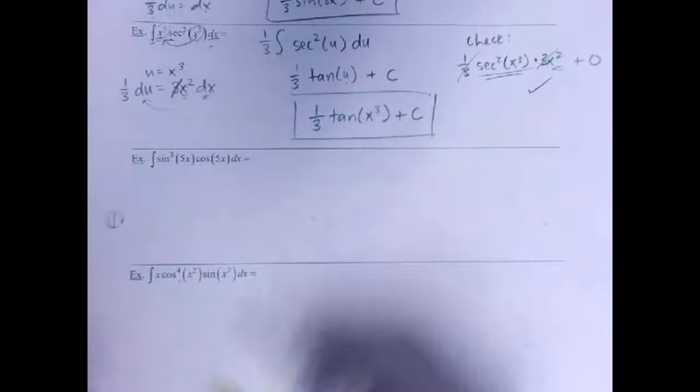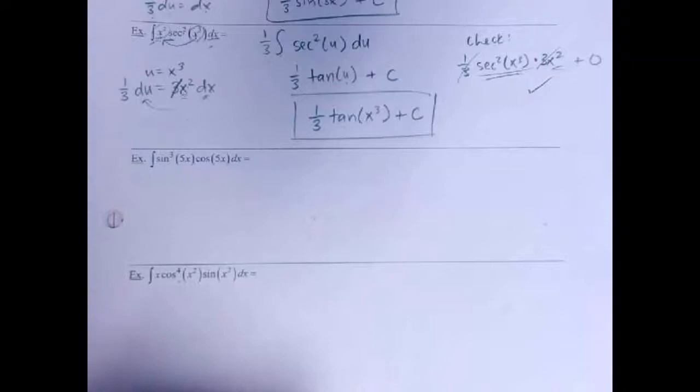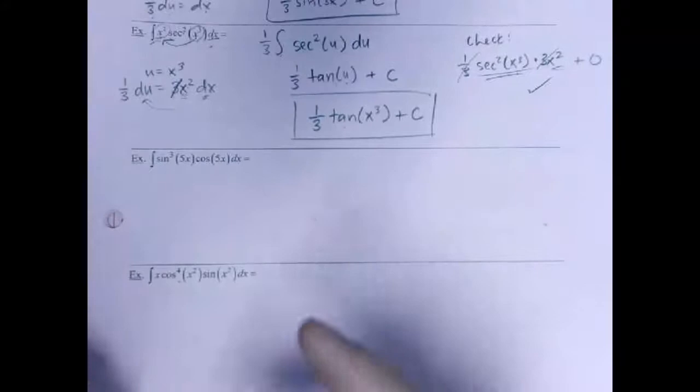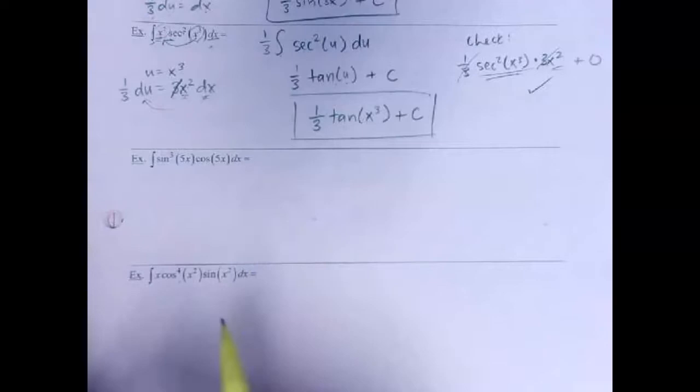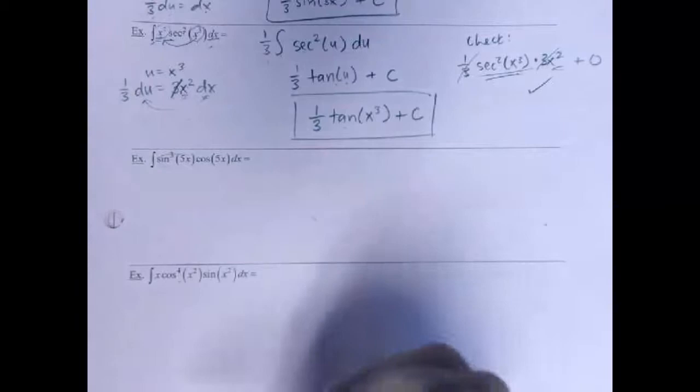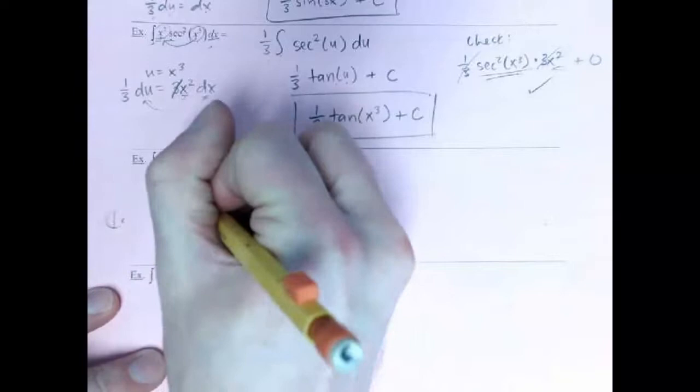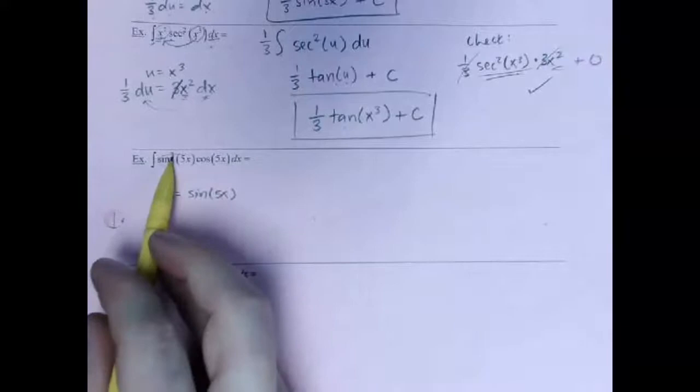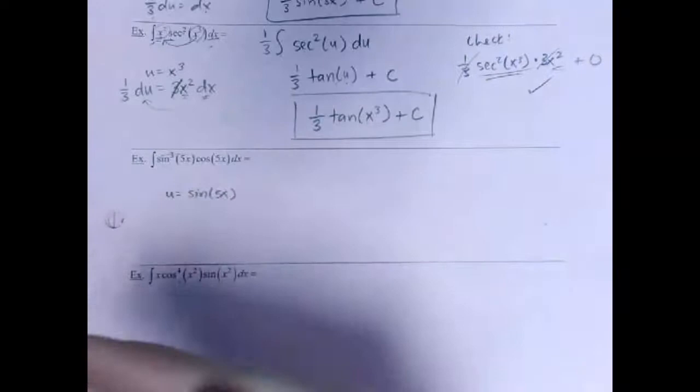Next example: I've got sine cubed 5x times cosine of 5x. I've got both trig chunks. You could set the u as 5x, do that first substitution, and then do a second substitution — but that's silly. Just do it all at once. Think: which trig, either the sine chunk or the cosine chunk, has something happening to it? That's the one that's causing chain rule. For me, it's the sine — the sine is being cubed. That's the one that's causing chain rule. The cosine is the result of chain rule. So the one that's being cubed is the one I'm going to set as u.